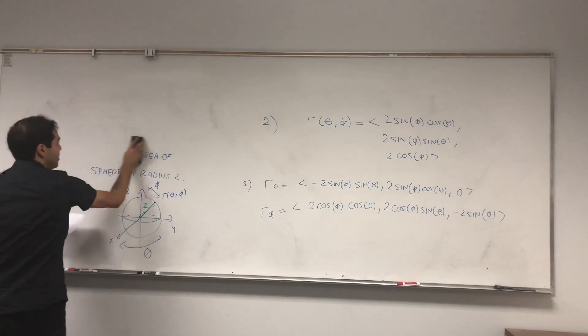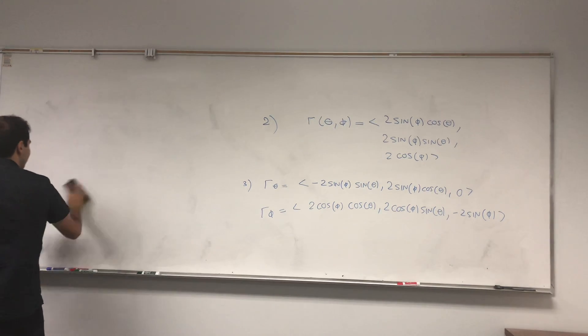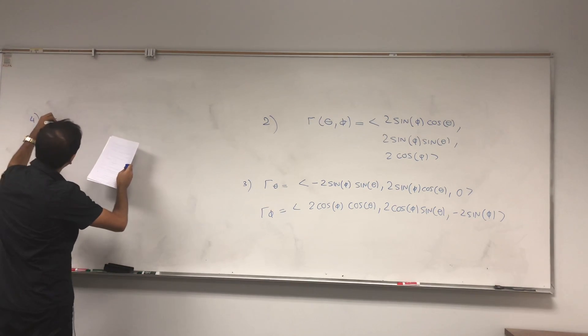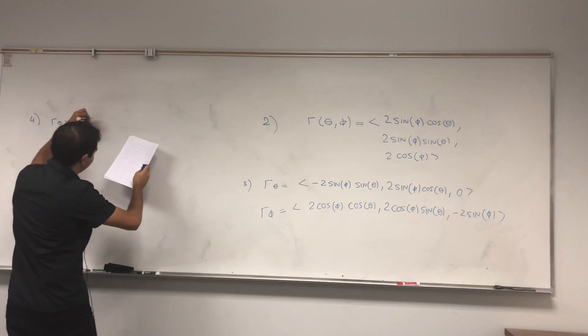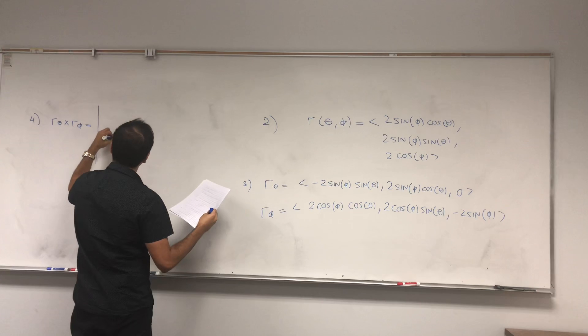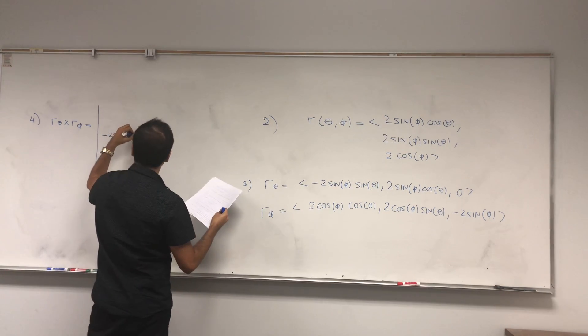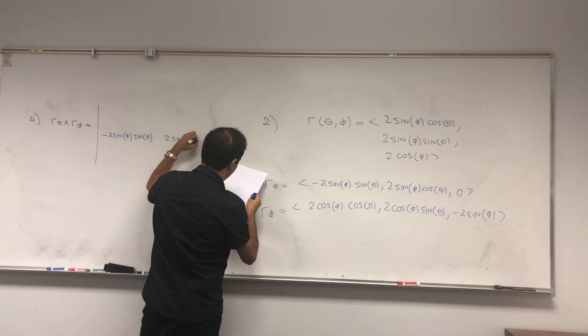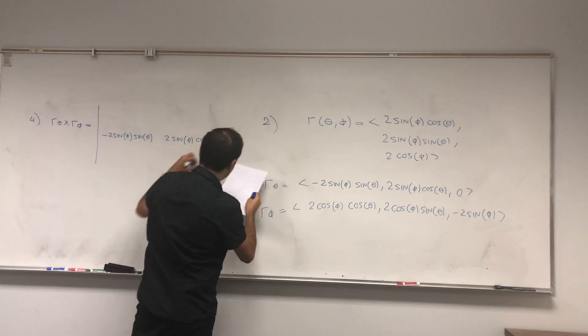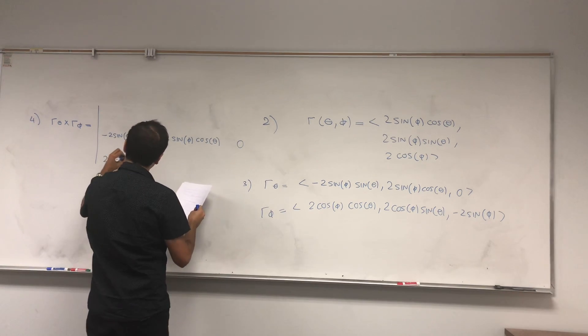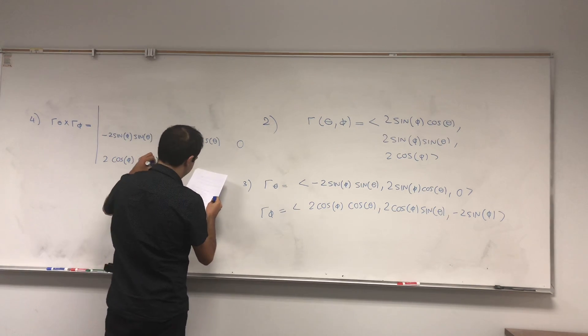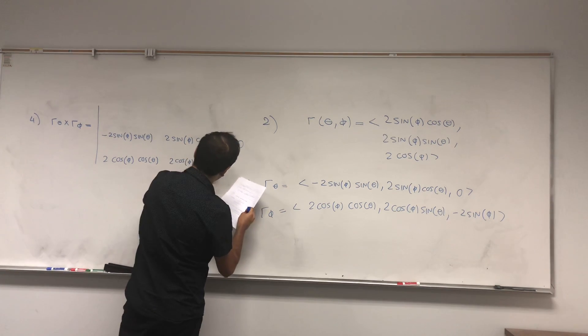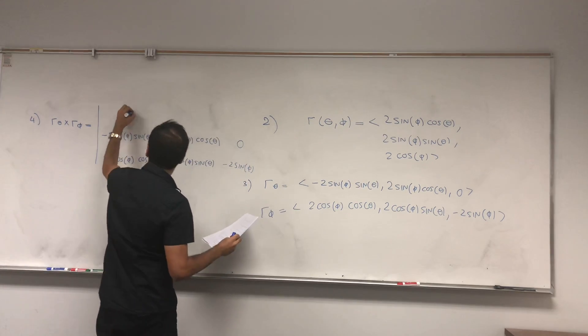The next thing is just as before. Again, surprisingly, you have to cross those two vectors. So like this evil biologist who crosses things. r_theta cross r_phi. That becomes -2 sin(phi) sin(theta), and it gets messy. Be careful. So 2 sin(phi) cos(theta), zero. 2 cos(phi) cos(theta). 2 cos(phi) sin(theta). -2 sin(phi). And i j k.